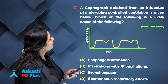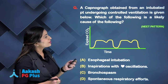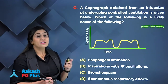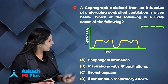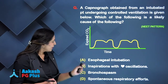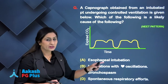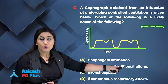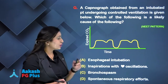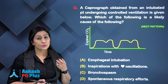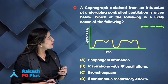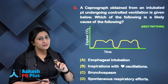Next question: a capnogram obtained from an intubated patient undergoing controlled ventilation is given. Which of the following is a likely cause? The options are: esophageal intubation, inspirations with cardiac oscillation, bronchospasm, or spontaneous respiratory efforts. This is almost always a question in exams, so you must know your capnogram adequately. We'll first review some theory.